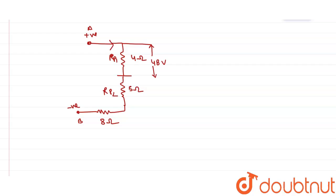The current is flowing in this direction. Current can be written from Ohm's law as I = V/R. So the current equals 48/4, which comes out to be 12 ampere.